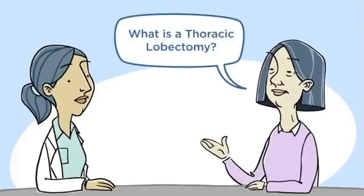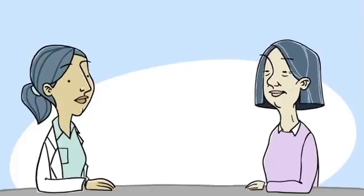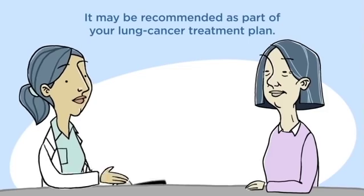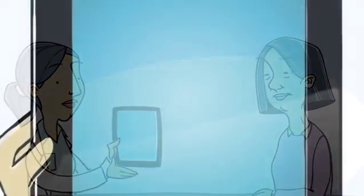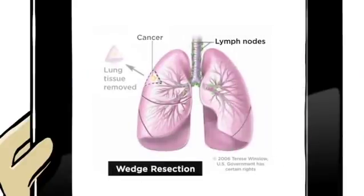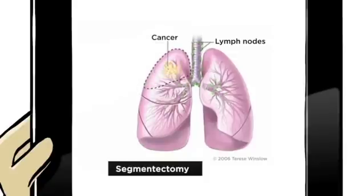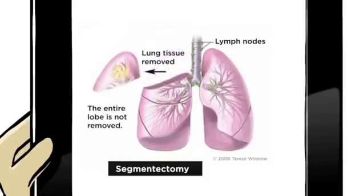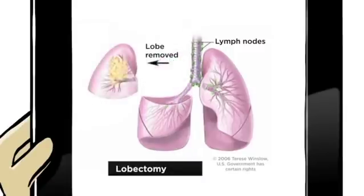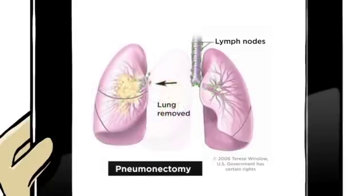Thoracic lobectomy is a surgical procedure to remove one of the lobes of your lungs. Your doctor may recommend surgery as part of your lung cancer treatment plan. There are several different options for surgeons to remove lung tissue. These include wedge resection — the removal of the tumor itself with some surrounding lung tissue or lymph nodes; segmentectomy — removal of a section of the lung and significantly more surrounding tissue and lymph nodes; lobectomy — removal of one lobe of the lung; and pneumonectomy — the removal of all lobes of one lung.